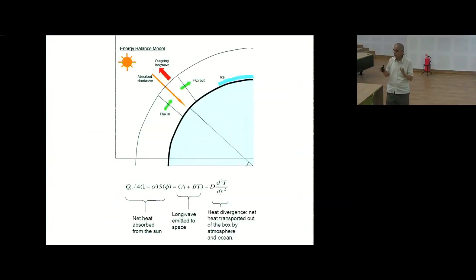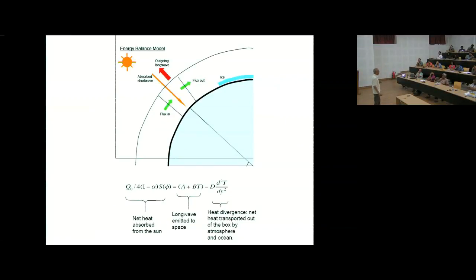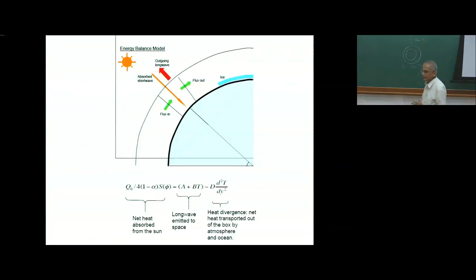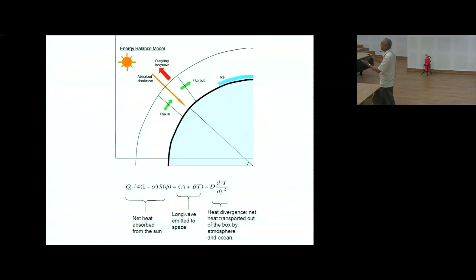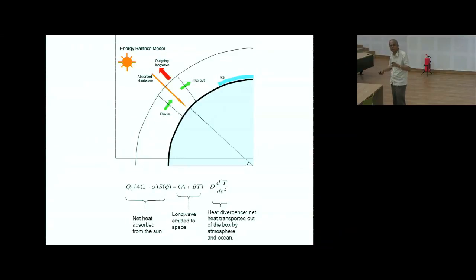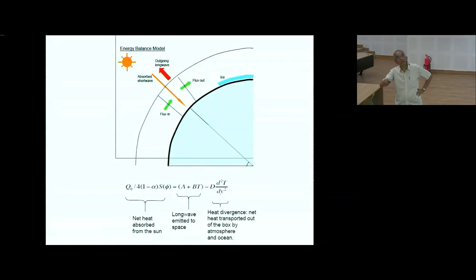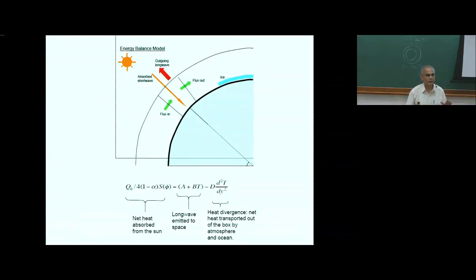So far I've talked about global mean temperature, treating the Earth as one single element — clearly a very crude approximation. In the real Earth, the poles are covered with ice and snow while the tropics are almost ice-free. For a more realistic model, you must have at least one spatial variable — latitude. This gives us an energy balance model with outgoing radiation, absorbed radiation, and heat transferred across latitudes. In reality, heat is transported by atmospheric motion and ocean circulation, but we represent that by diffusion — a good approximation in many situations.